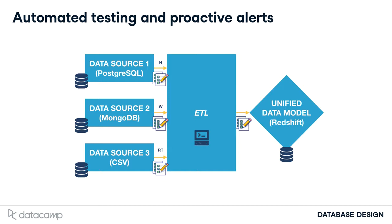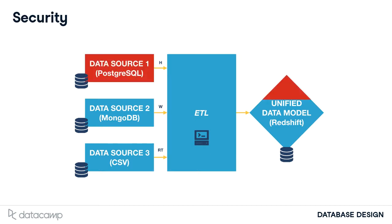For example, you could aggregate sales data after each transformation and ensure that the total amount remains the same. Security is also a concern. If data access was originally restricted, it should remain restricted in the unified data model.